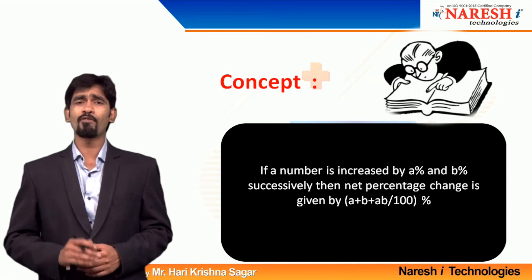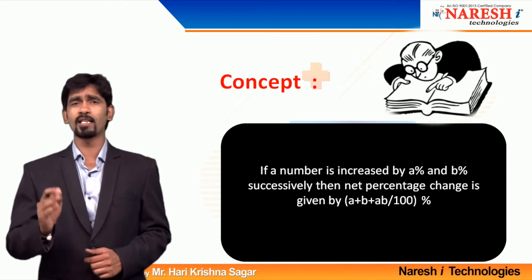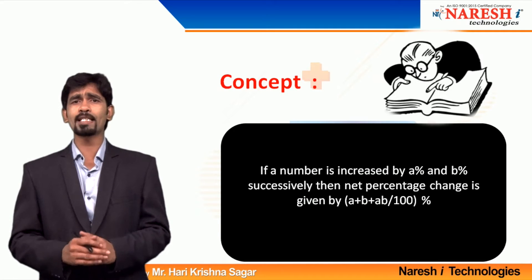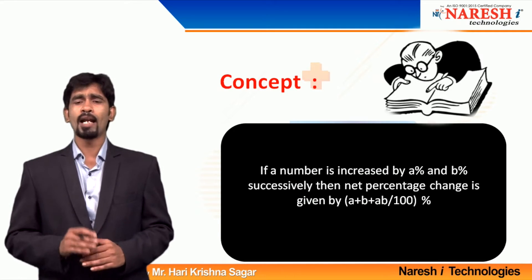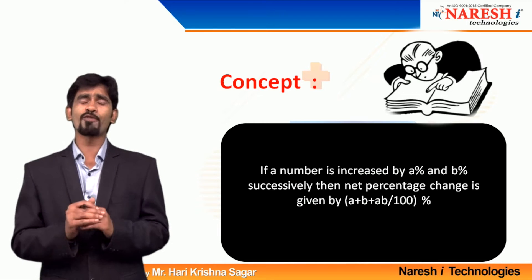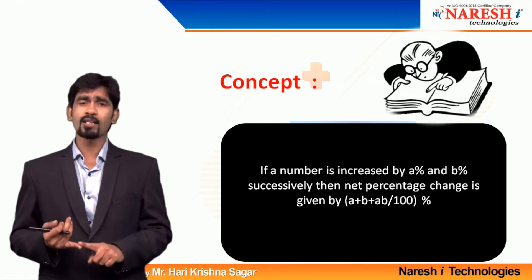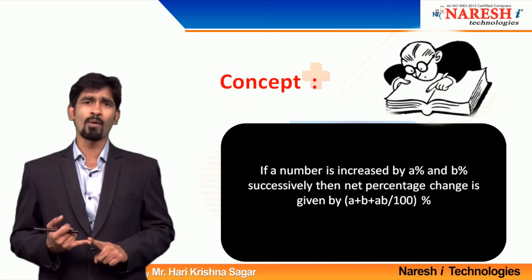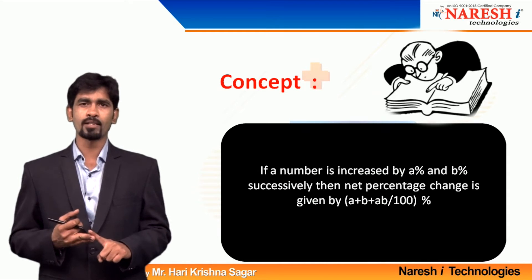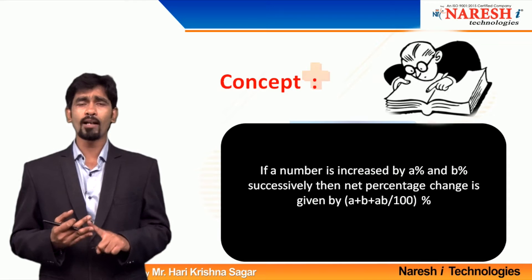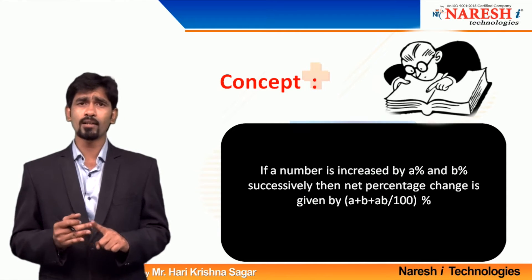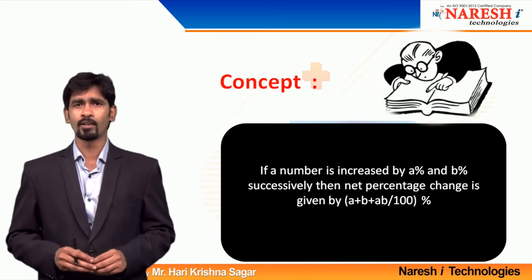Whenever we have A percentage increase and B percentage increase in a successive pattern, the overall increase is always given as A plus B plus AB by 100 percentage. That is the formula of successive percentage. You can apply the successive percentage formula wherever you see repeated increases or repeated decreases, or wherever you see terms available in the form of a product.